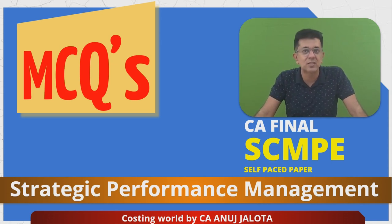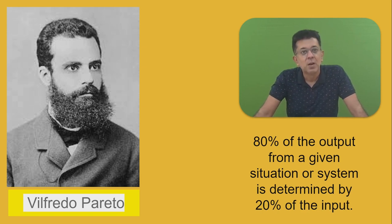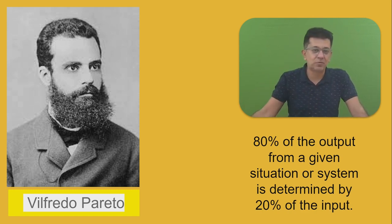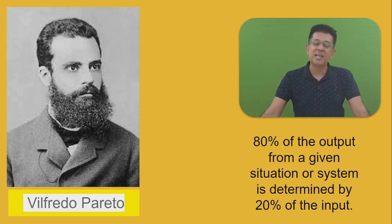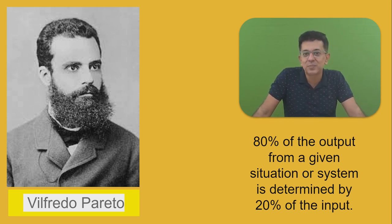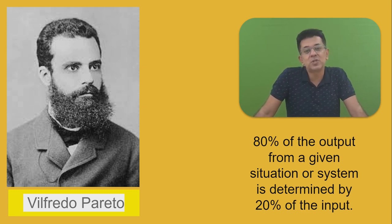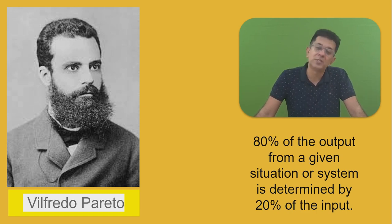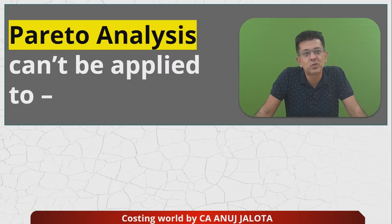Whatever we are doing today is all based upon Pareto analysis. Wilfredo Pareto said that 80% of the world's wealth is in the hands of 20% of people. He started applying this to business, and one principle that came out is that 80% of output in any situation is usually determined by 20% of the input. For example, 80% of all the doubts in classes are usually asked by 20% of the students, and 80% of fights with my wife are because of 20% of the reasons. He applied this to business as well.